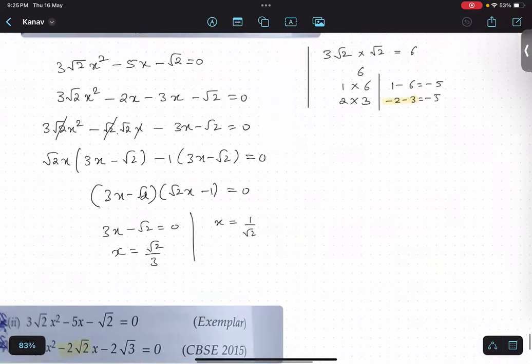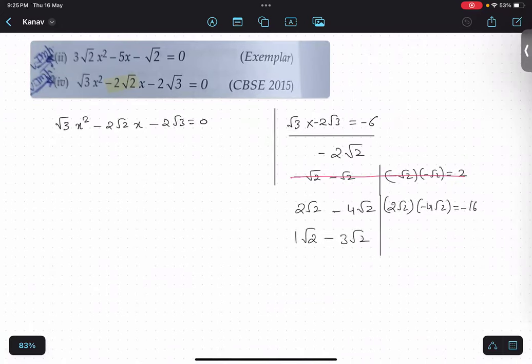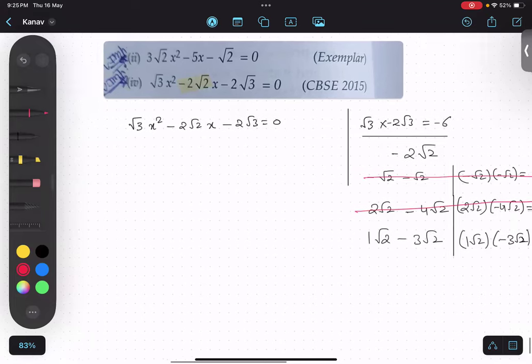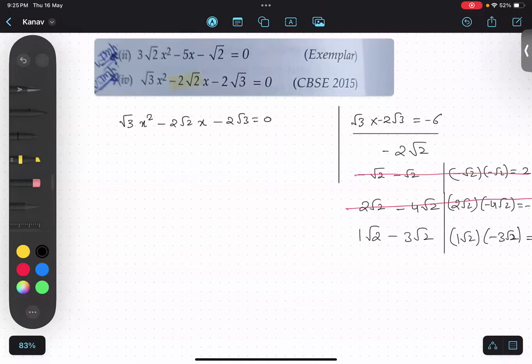Sorry. One second. So in this particular case, last part. Now, 1√2 multiplied by negative 3√2. So 1 into 2, 1 into 3 is 3 into 2 is negative 6. So this is coming out to be correct. Yes or no? So this is going to be correct. Yes. This is hit and trial.